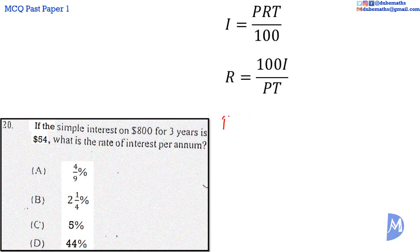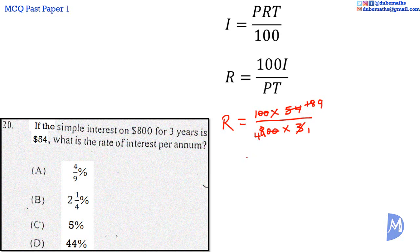Thus, R is equal to 100 multiplied by I, where I is $54, all over the principal P multiplied by the time of 3 years. Canceling: 100 into 100 is 1, 100 into 800 is 8, 3 into 3 is 1, and 3 into 54 is 18. Then 2 into 8 is 4 and 2 into 18 is 9. So R equals 9 over 4, which as a mixed number is 2 and one quarter. The answer is B.